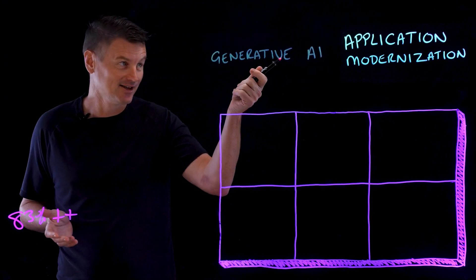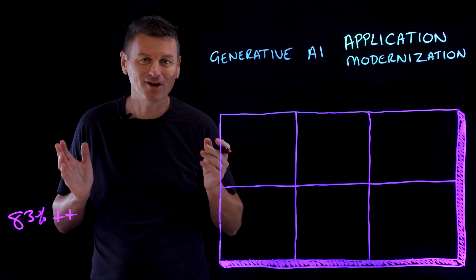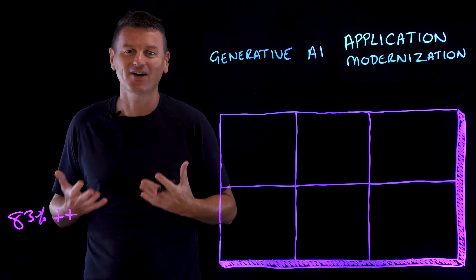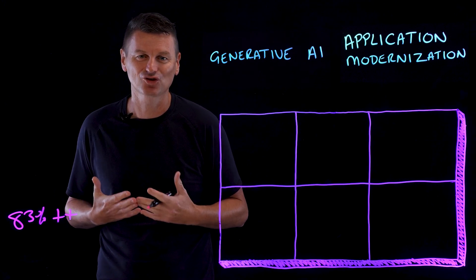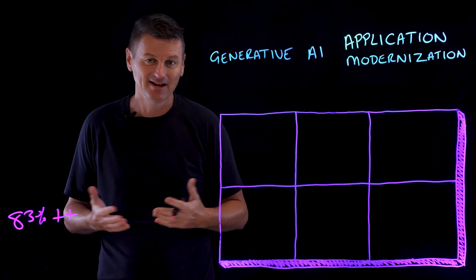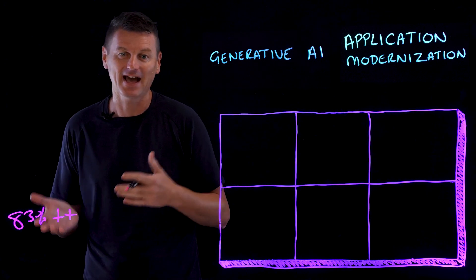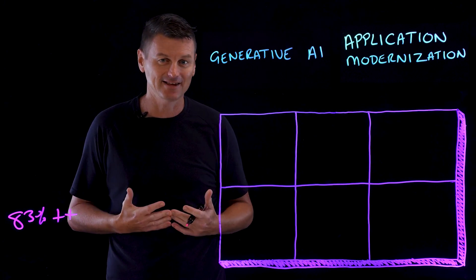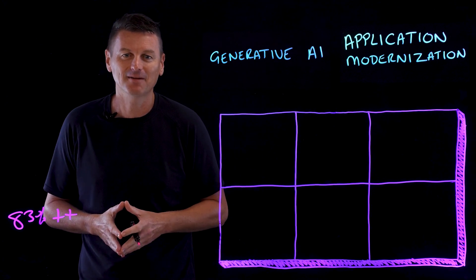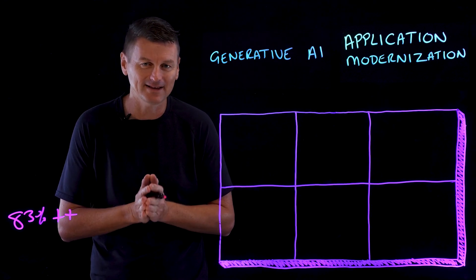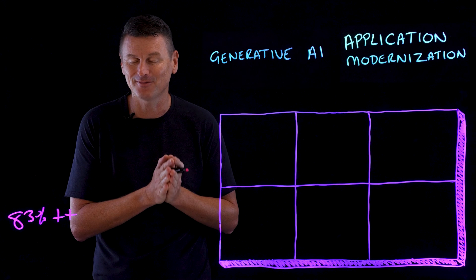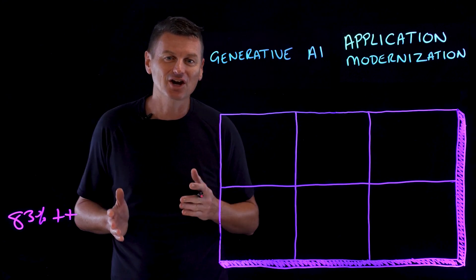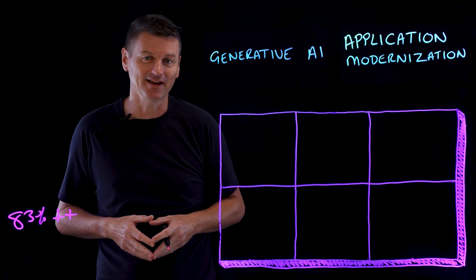Another term I want to define is generative AI. And I rather suspect you're quite familiar with this term already. It refers to a subset of artificial intelligence where the system is trained to generate new content. Now, this could be in the form of images and text, but it can also be the generation of code and software functionalities. Generative AI can produce output that wasn't explicitly part of its training data set, which makes it a really powerful tool. So I think it's pretty clear that combining these two things is something